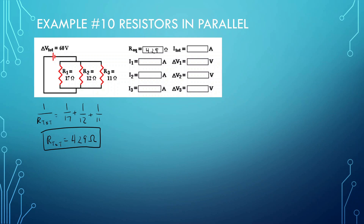Now that we have the resistance total, we can find the total current. V total equals current total times R total: 60 equals I total times 4.29. So the total current is 60 divided by 4.29, giving 13.99 amps. Since this is in parallel, each branch sees the same 60 volts.